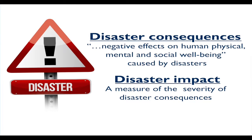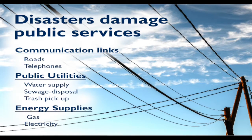Disaster impact is the measure of the severity of a disaster — the number of people homeless, injured, or displaced. Public services are also affected, with cascading effects causing further injury or illness. Communication links — roads, telephones, internet — are disrupted not only for victims but for responders as well, making an effective response much more difficult. We have to make communication more robust.